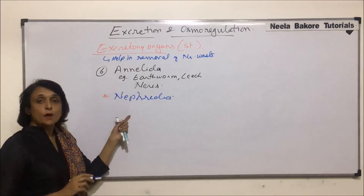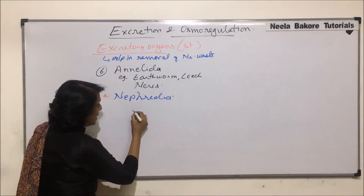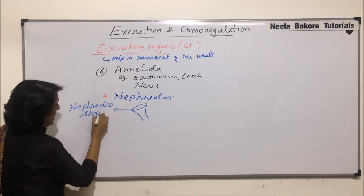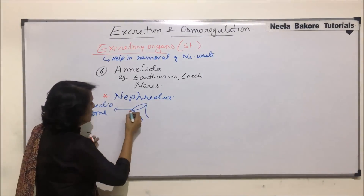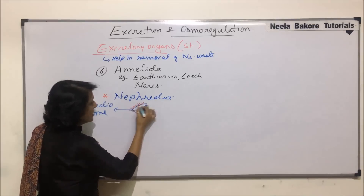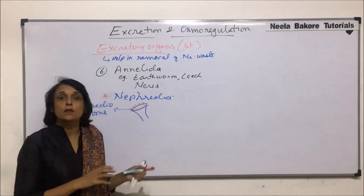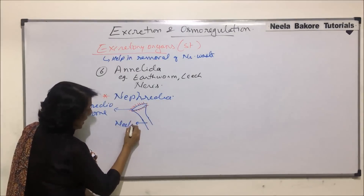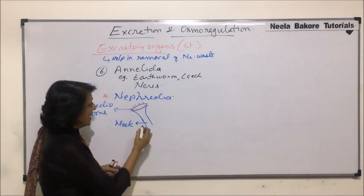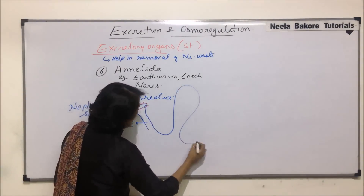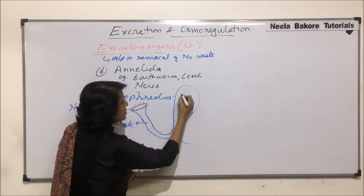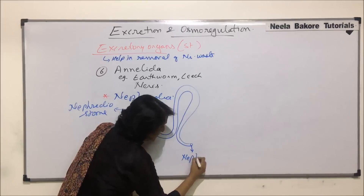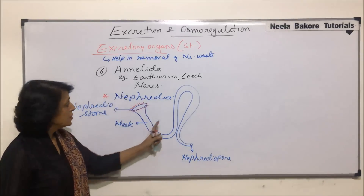When we talk of a nephridium, it has a funnel-like opening known as the nephrostome, and it is lined with cilia. This nephrostome lies in the coelomic cavity. It leads into a narrow tube called the neck, and then there is a long tube which is highly coiled. It opens out through an opening called the nephridiopore.